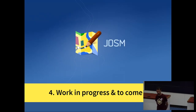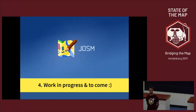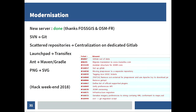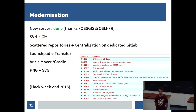The last section is what we are working on and what you can expect in the years to come. We are currently modernizing all of our stuff — we are using a lot of old technologies that were up to date in 2005, not so much in 2019. We needed first to set up a new powerful server, done thanks to Fosgis and OpenStreetMap France. We are currently working on switching from SVN to Git, from the Launchpad translation system to Transifex, from a single scattered repository across GitHub plus our repository to centralize everything on a dedicated GitLab instance, and from Ant to Maven and Gradle. Also switching from PNG icons to scalable SVG files.